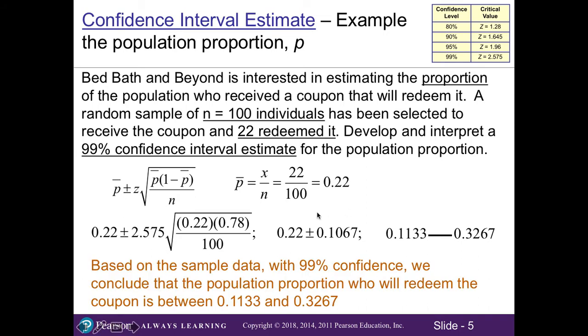Thus, based on our sample data of 100 individuals with 99% confidence, we can conclude that the population proportion who will redeem the coupon is somewhere between 0.1133 and 0.3267. In other words, it means 11.33% to 32.67% of people will use the coupon.